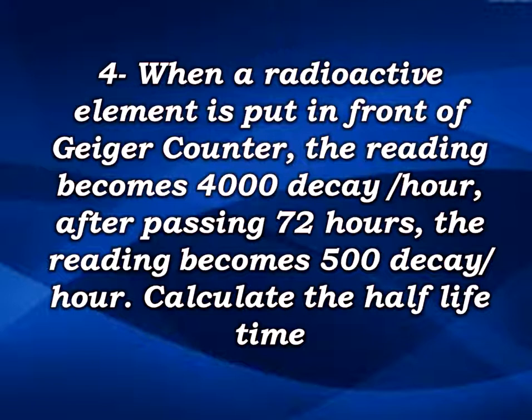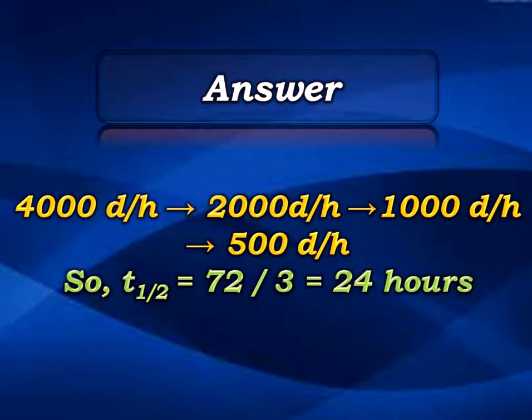The half-life is the time taken by a radioactive element to decay its mass by half — meaning 50% of its mass. Starting at 4,000 decay per hour, divide by 2 gives 2,000; divide by 2 again gives 1,000; divide by 2 once more gives 500 decay per hour.